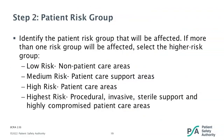Continuing to step two, you will be determining the patient or resident risk group. You're identifying the individual risk group that will be affected — if you have more than one risk group affected, you should select the higher group. The groups are divided into four possibilities: Low risk — non-patient care areas; Medium risk — patient care support areas; High risk — patient care areas; and the Highest risk — procedural, invasive, sterile support, and highly compromised patient care areas.